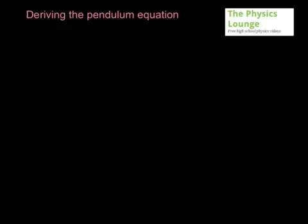So in this video I'm going to attempt to derive the equation for the pendulum. And just so we know what we're aiming for, the period is 2π times the square root of the length of the pendulum over g, gravitational field strength.